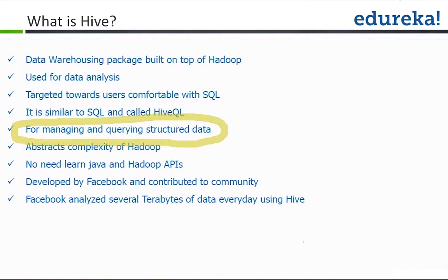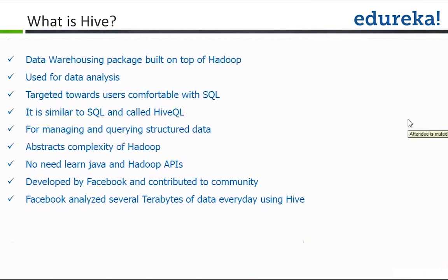Hive basically hides the complexity on top of Hadoop — you are not writing code directly in MapReduce, but writing in a language you are familiar with, the SQL kind of language, and that gets converted into the Hadoop MapReduce job. As per the history of Hive, it was developed at Facebook and contributed back to Apache open source. Facebook claims they analyze several terabytes of data every day with the help of the Hive interface.